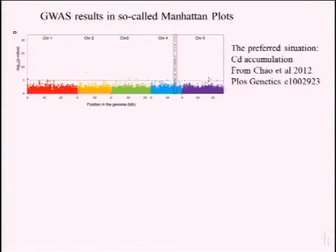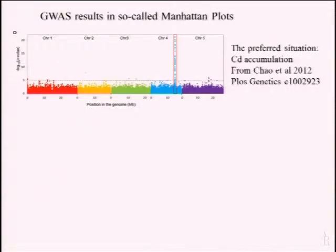What is the outcome of association mapping? A recent paper from the group of David Salt — very cool — was looking at cadmium accumulation. This is what you want: it shows the genome, five chromosomes of Arabidopsis, and the significance of a SNP or a few SNPs in one region that are significantly associated with the trait. Here you're really on top of the gene. But I should say we are doing many experiments like that, and it's often not so nice as this one.